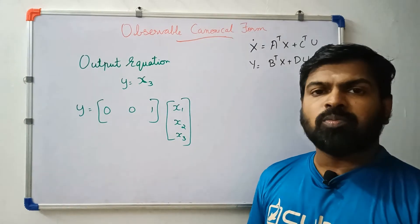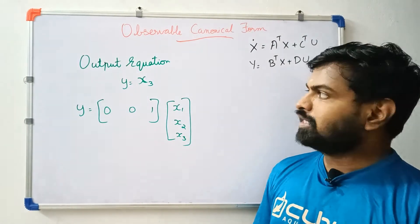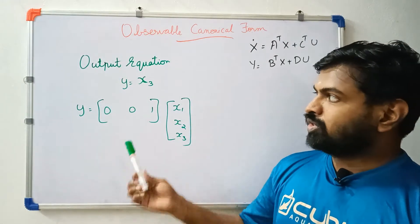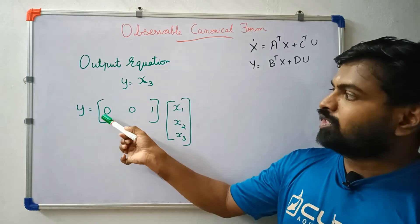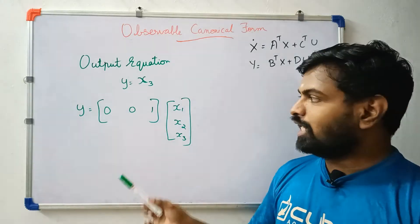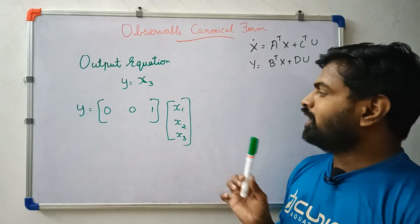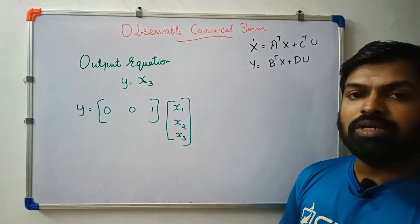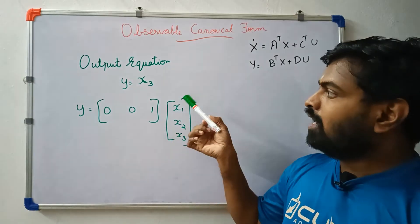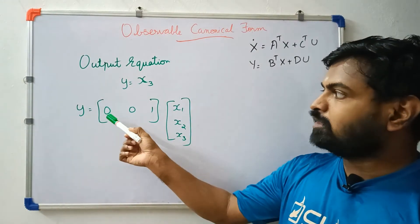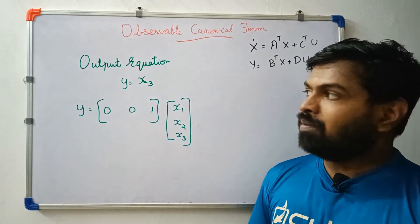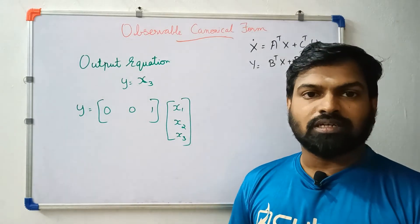Now let's look at the output equation. We already have it: y equals x3. In matrix form, the output y equals [0 0 1] times [x1; x2; x3]. The state and output equation are now fully derived.